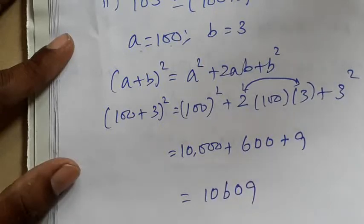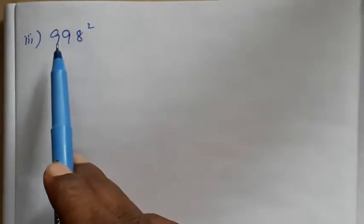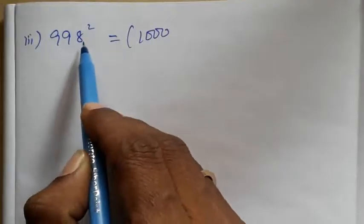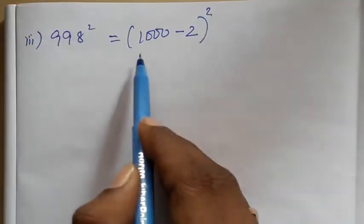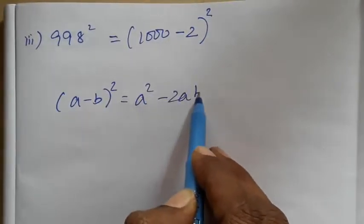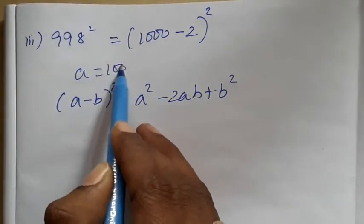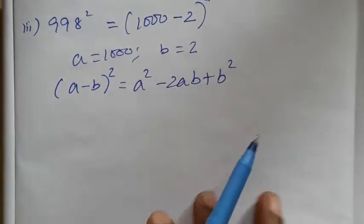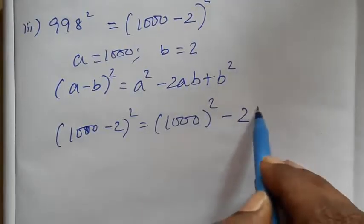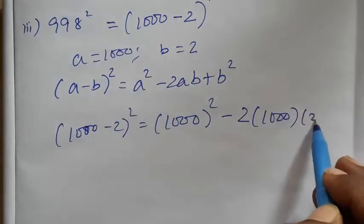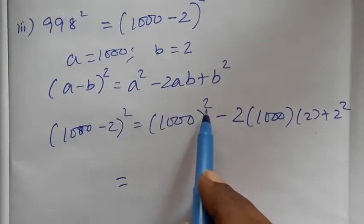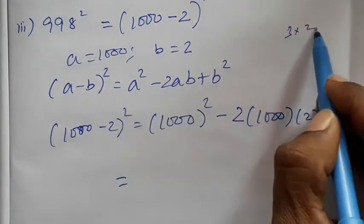Looking at 1, 2, 98 squared — what is the value? 1, 2, 98 squared. 2, 98 squared. A minus B whole squared formula will be A squared minus 2AB plus B squared. How many times? 1, 2, 3 — that's 60, 90.